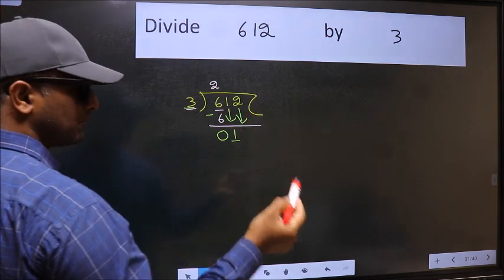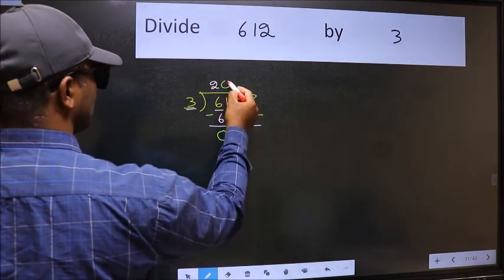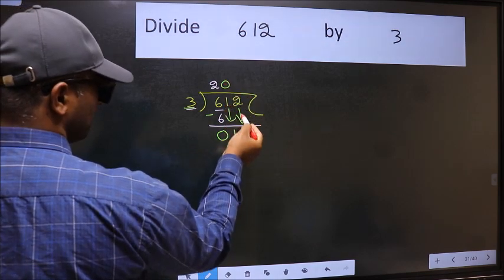And the rule to bring down second number is, we should put 0 here. Then only we can bring this number down.